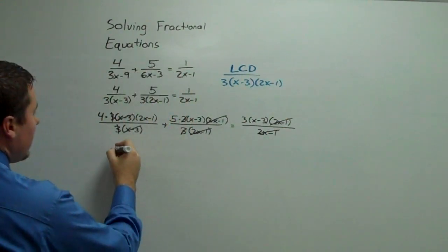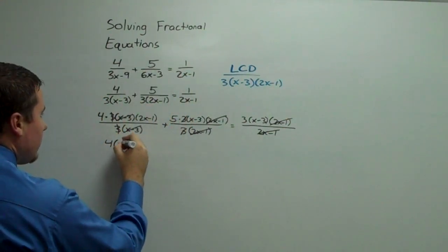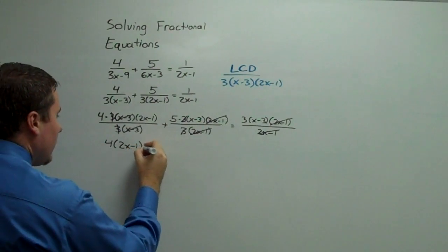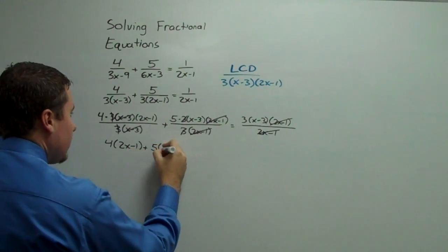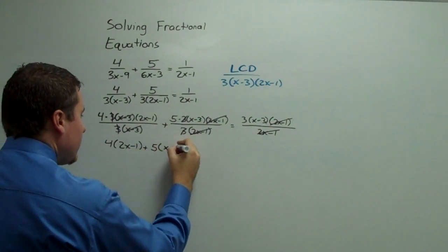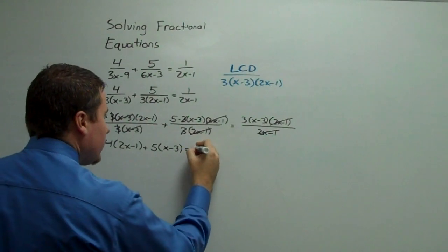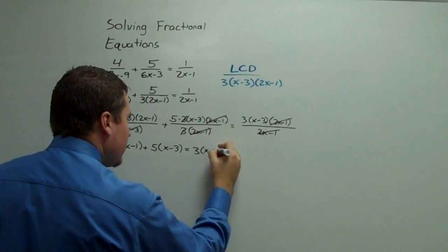So we are left with 4 times 2x minus 1, plus 5 times x minus 3, equals 3 times x minus 3.